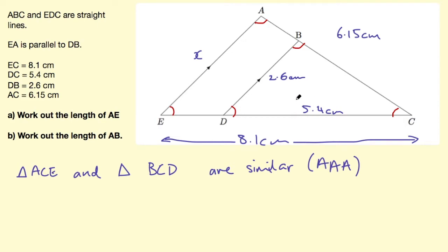If I can figure out how much that side DC has enlarged by I can figure out how much DB has enlarged by to figure out AE, and because they're similar all the sides will be enlarged by the same amount.